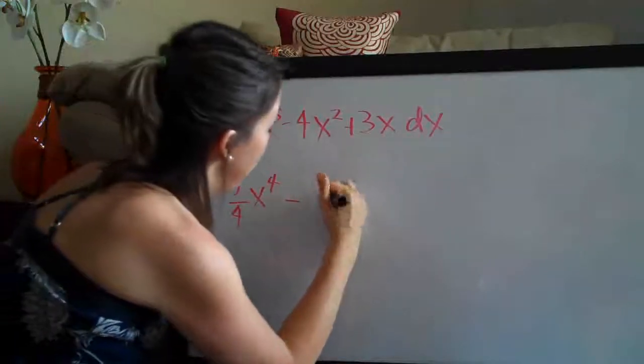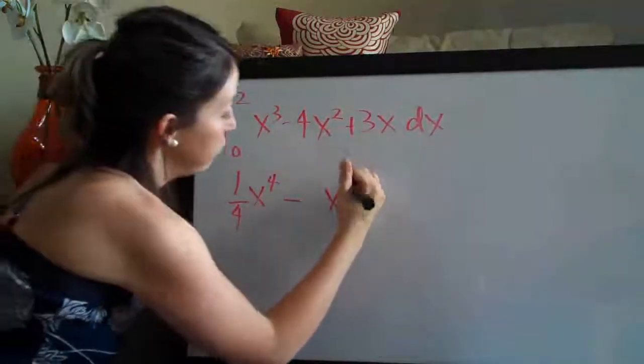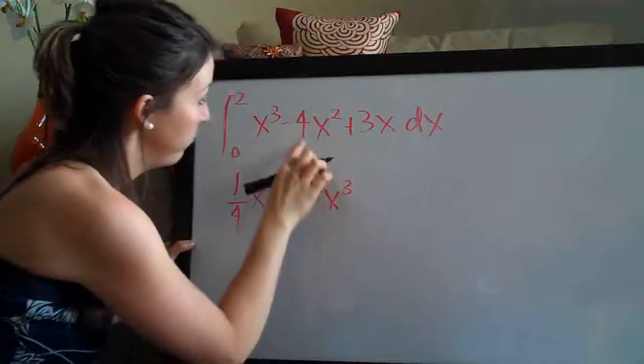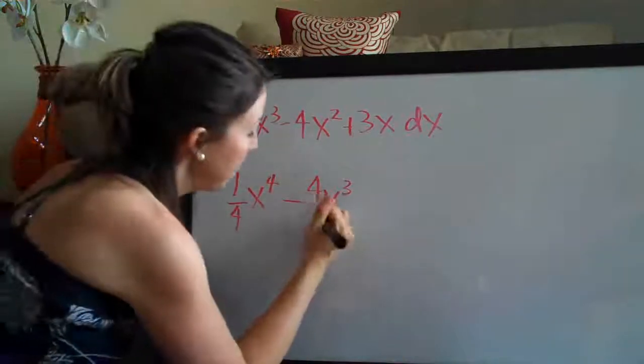Then we'll subtract. We add 1 to the exponent, 2 plus 1 is 3. Divide the coefficient, 4, by the new exponent, 3.